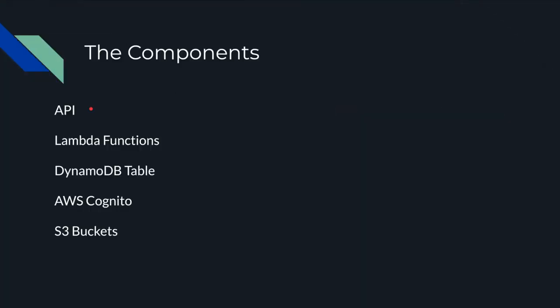These are the components that we will be charged for. We have a GraphQL API powered by AppSync, and we have two Lambda functions — one to process payments and the other to create orders. If we have additional functions, like sending an invoice to the customer, the costing can be calculated the same way. We also have a DynamoDB table to store books and book orders, including secondary indexes, and a Cognito user pool to hold our users.